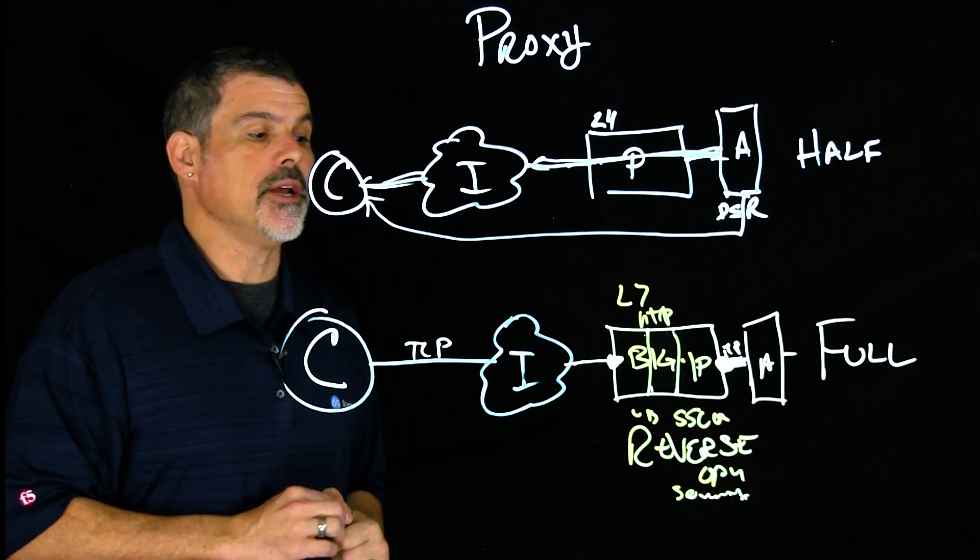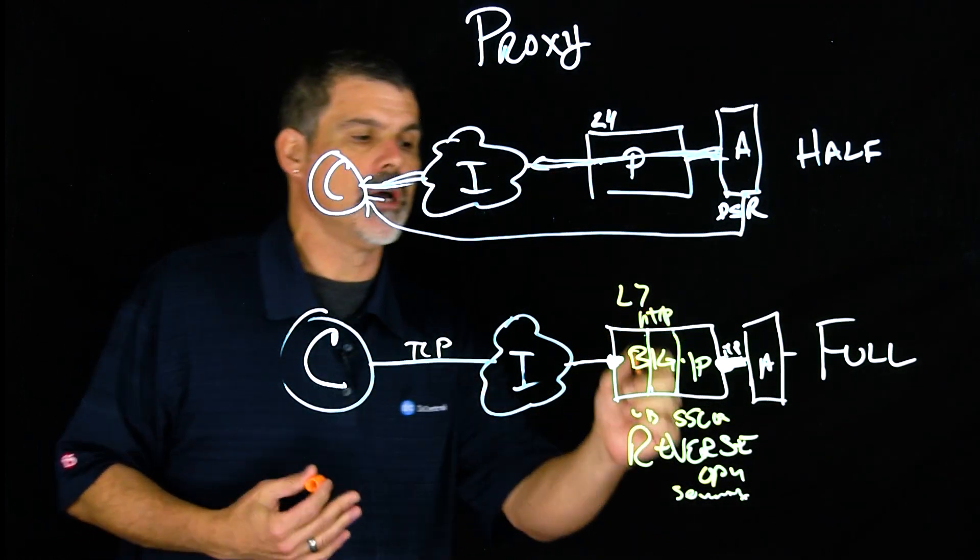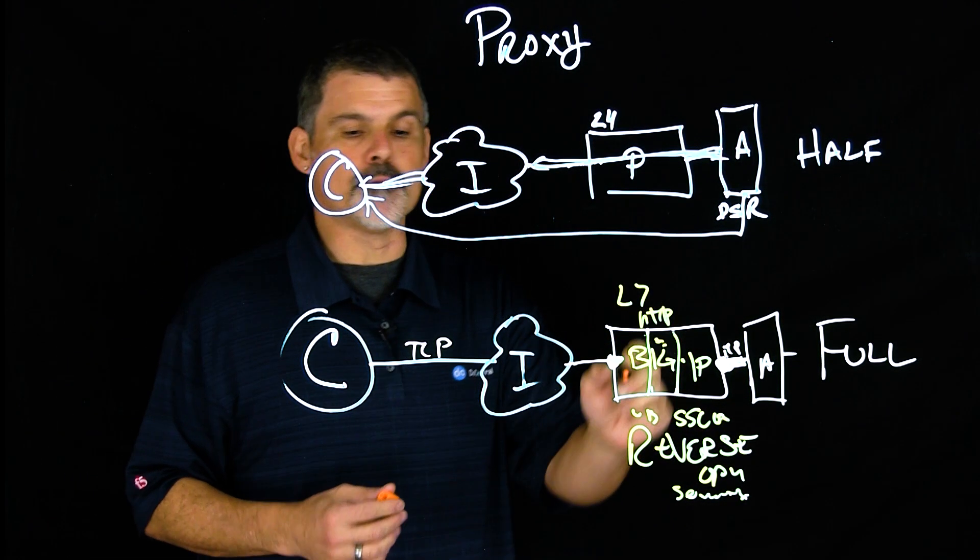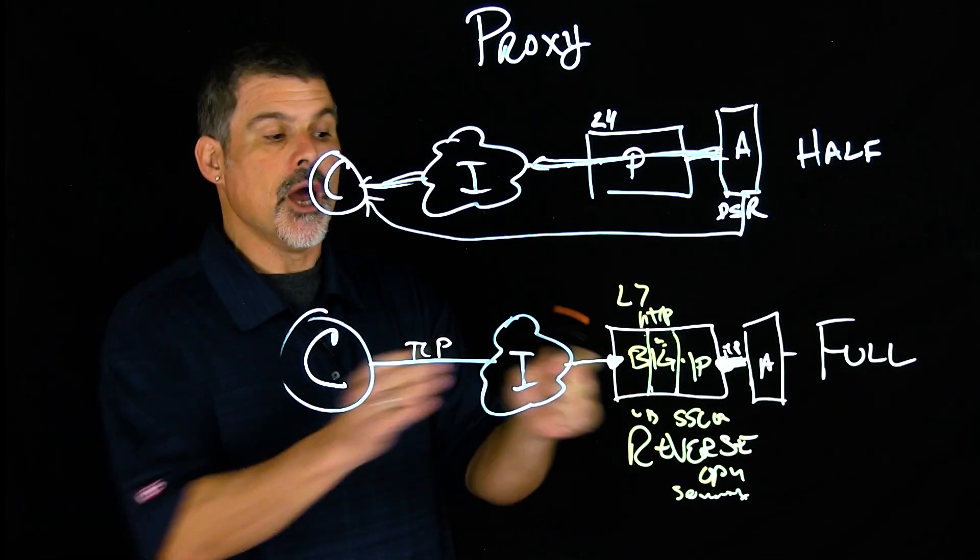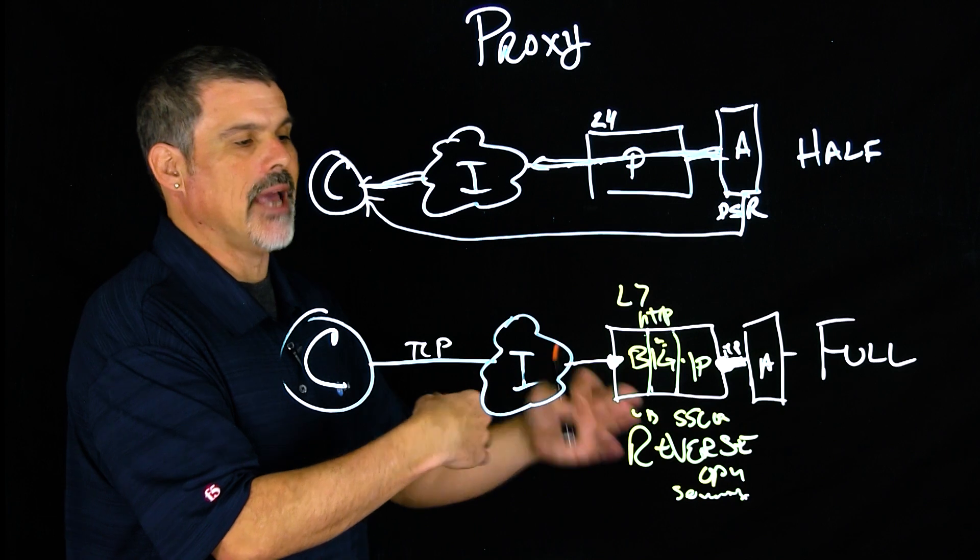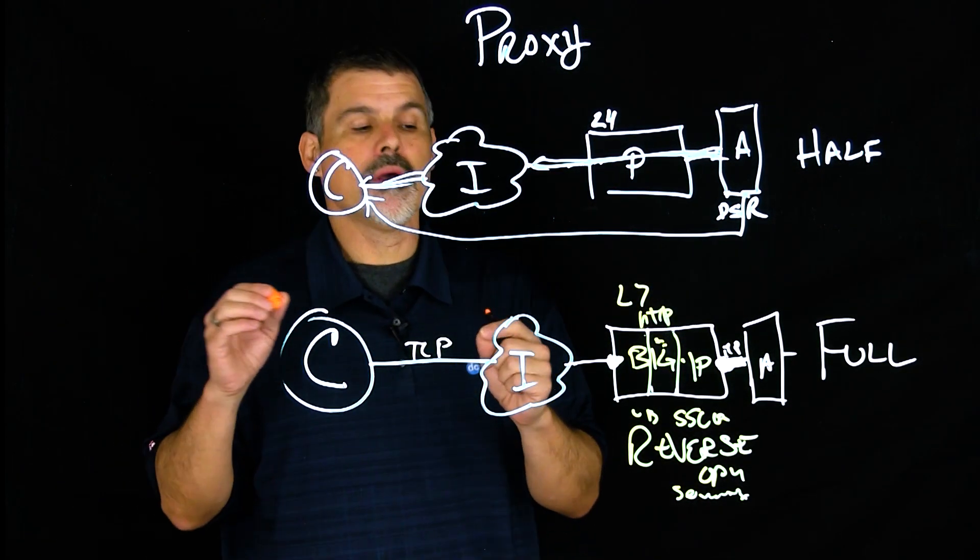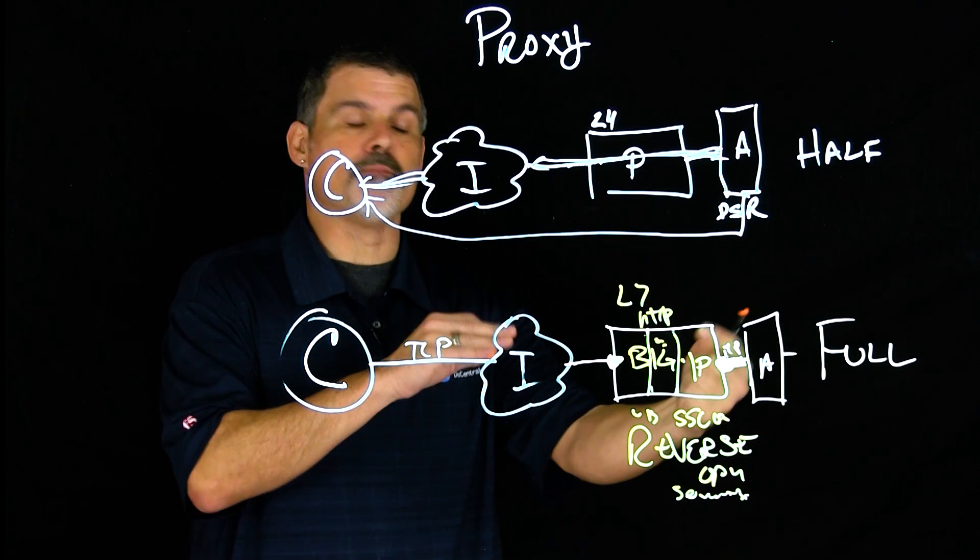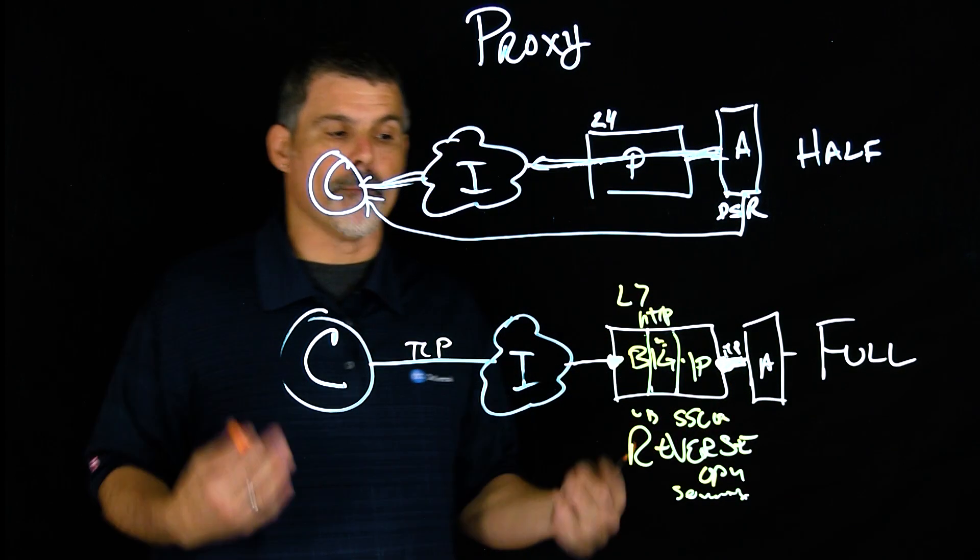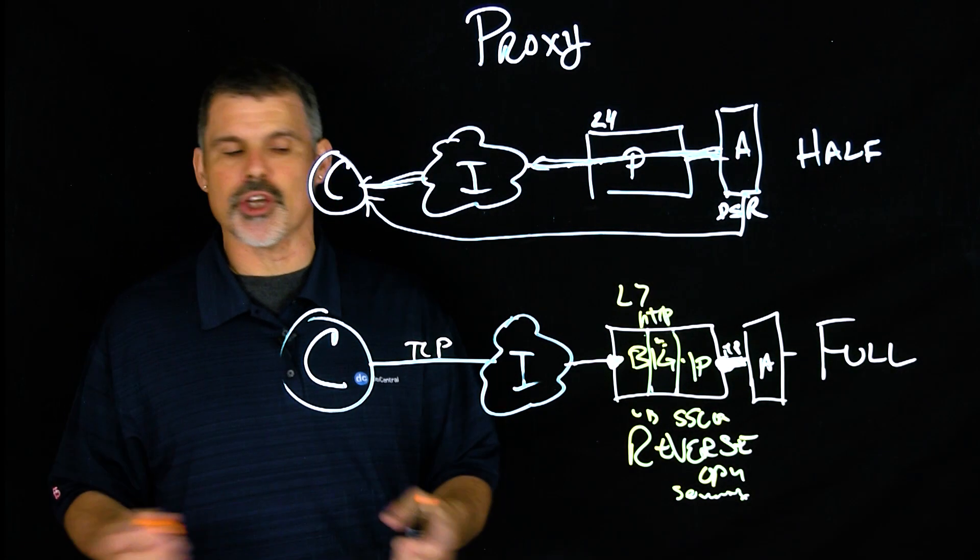You could then also even put a Big IP ASM, so a web application firewall policy here, and that policy would then inspect the traffic. It would inspect the traffic both on the way in to ensure nobody's trying any funny stuff on the back end, but will also inspect traffic, the response, on the way out, potentially masking or blocking sensitive information like credit card numbers or social security numbers.